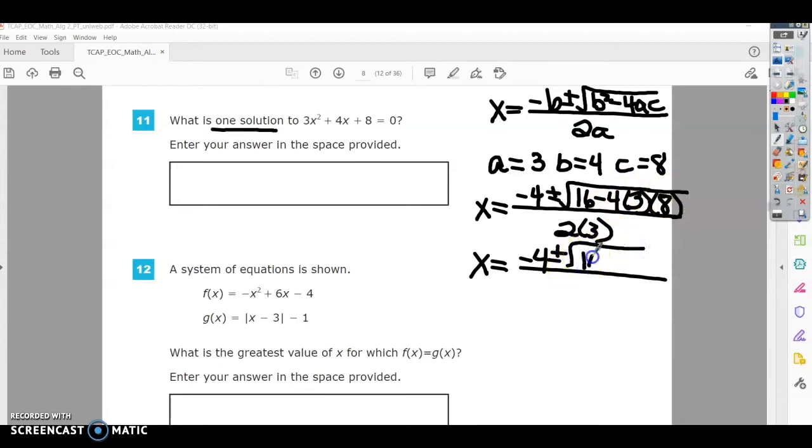So I'm still going to have the 16, and I've got these three multiplied together, gives me negative 96. And then 2 times 3 is 6.